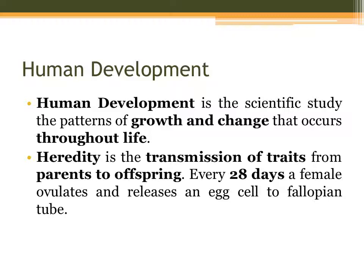Every 28 days a female ovulates and releases an egg cell to the fallopian tube. If there is sexual intercourse that happens during those days, the egg cell and the sperm cell will meet and fertilization will happen, and from there human development starts.